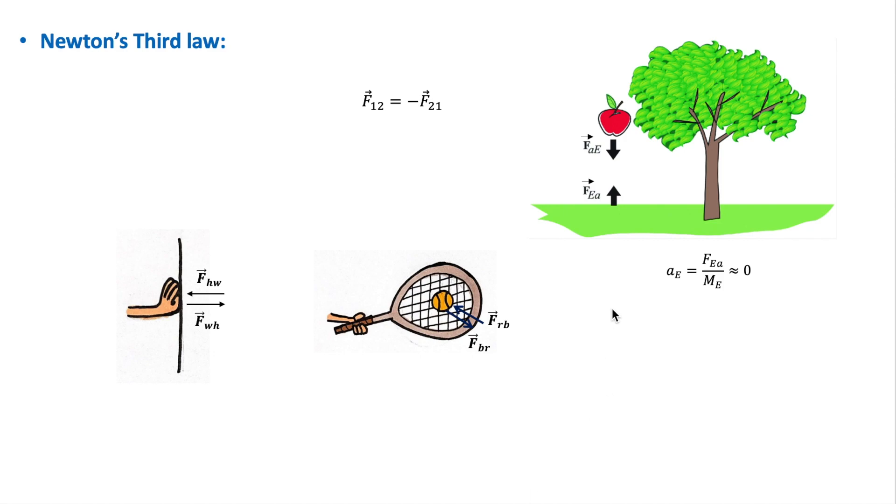So let's take as an example the apple and the earth. So as you can see, the gravitational force exerted by the earth on the apple has an equal and opposite reaction, which is the force that the apple exerts on the earth, Fea. So these two forces form an action-reaction pair. And because they are acting on different objects, they can't cancel each other out.